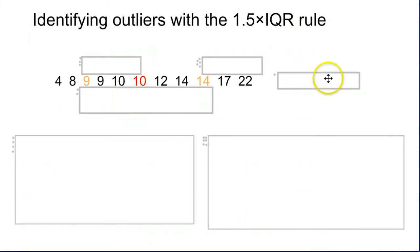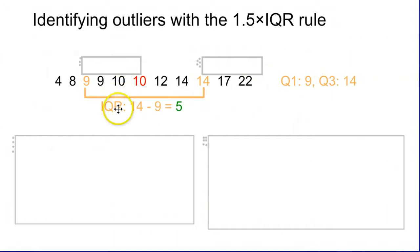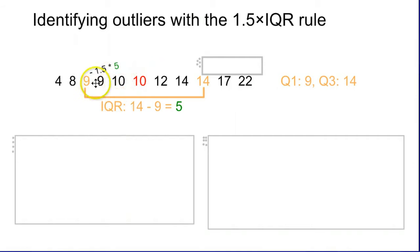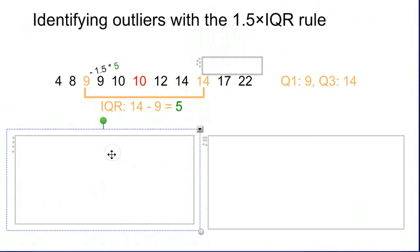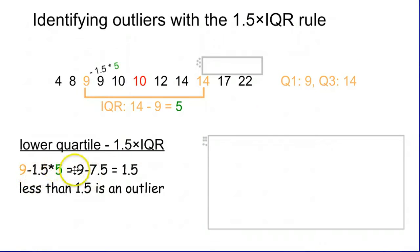The quick calculations: quarter one is nine and quarter three is 14. The IQR is 14 minus nine, which gives us an IQR of five. Once we know that, we take one and a half times five, which is 7.5, and subtract that from quarter one: nine minus 7.5 is 1.5. Any number in this list less than 1.5 would be considered an outlier. Fortunately, there are no numbers less than 1.5 in our list, so no outliers on the low end.